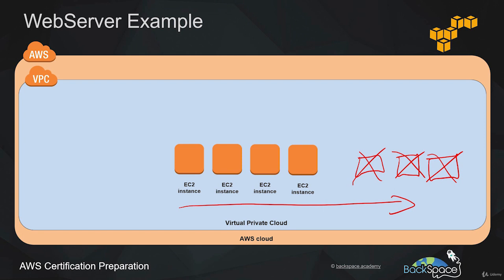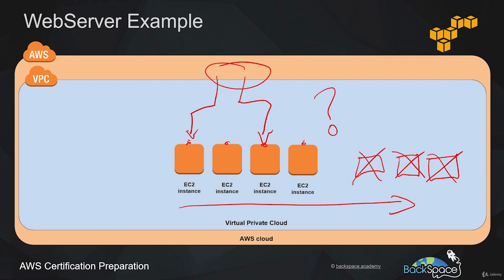One problem with this architecture is that it has multiple endpoints for our web server, which is not practical. Customers are not going to go to one endpoint until it stops working and then go to another. Their browser bookmarks won't be valid either. We need a way of having one single endpoint for the web application, and then distributing requests to an available EC2 instance.